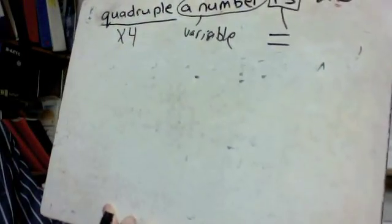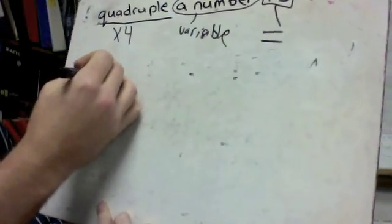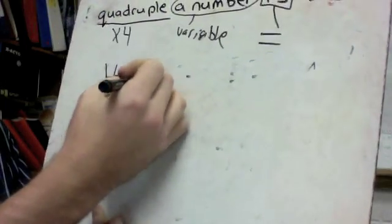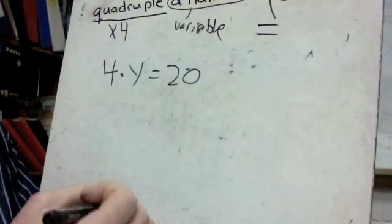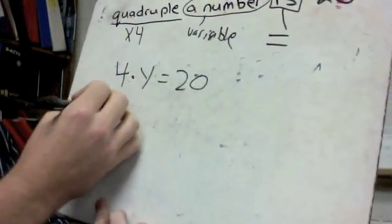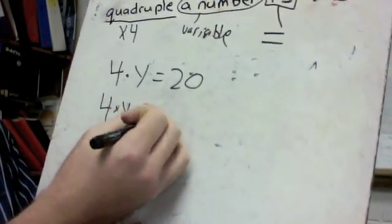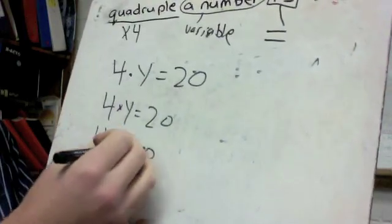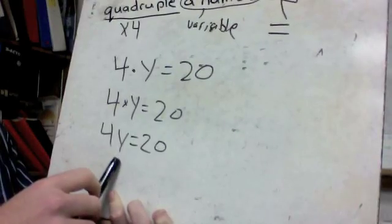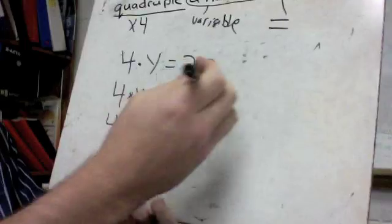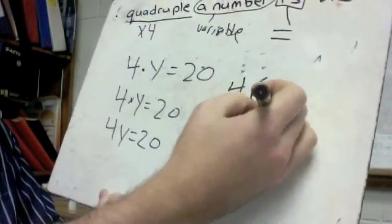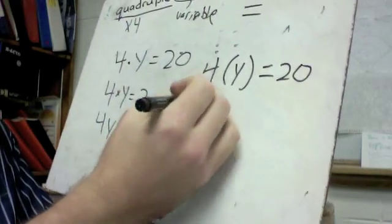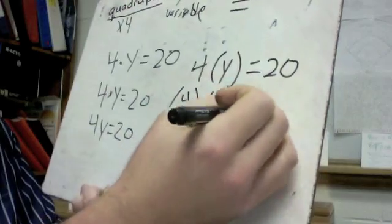So in order to write that we could do it a couple of different ways. I could just write four times, let's say the variable I use is Y. Four times Y equals 20. Okay that was one way you could write it. You could write it like this. I could do four times Y equals 20. That was another way to write it. I could write it just 4Y equals 20 because we said before if the number is right beside the letter, the variable, that's multiplication. I could also write it like this. I could go for parenthesis Y equals 20. That's also multiplication. And if I wanted to put them both in parentheses that would be perfectly fine. That would also indicate multiplication. So it's just all about picking out the key words that are in the phrase.